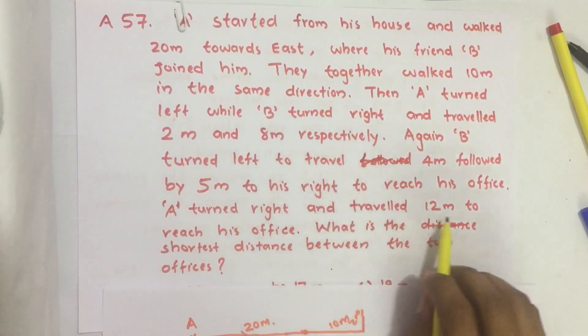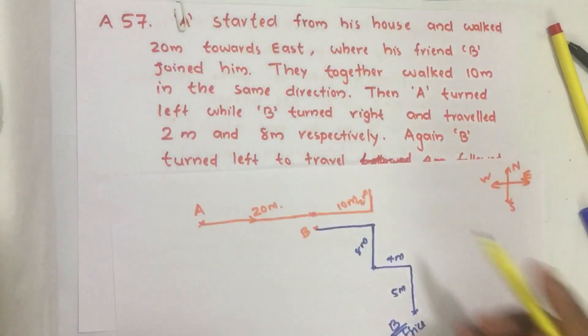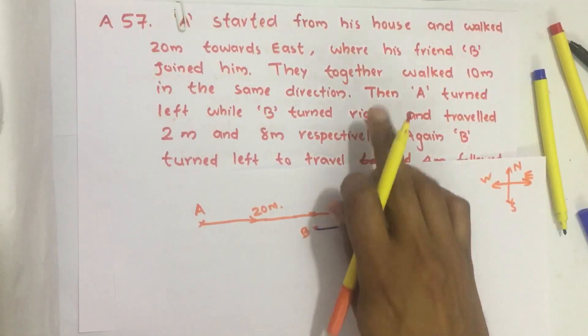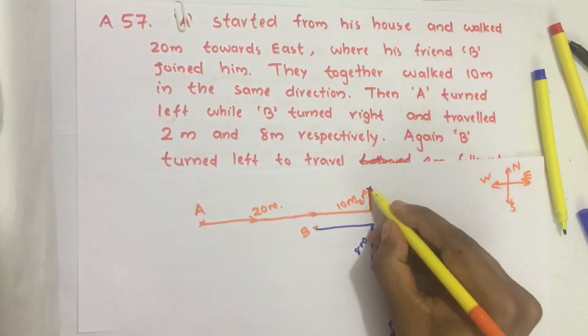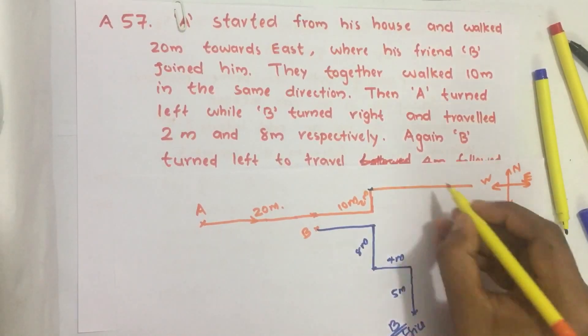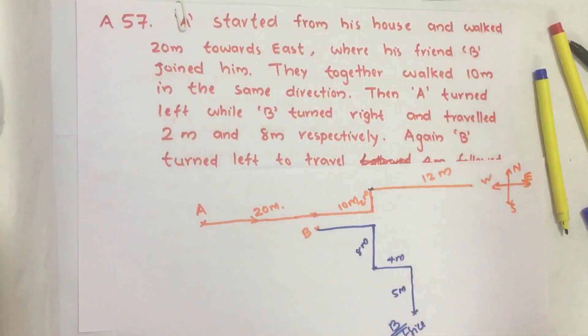And A turned right and traveled 12 meters to reach his office. After this point, A turned to his, if he is walking like this, his right is this side. So he turned to right and traveled 12 meters.